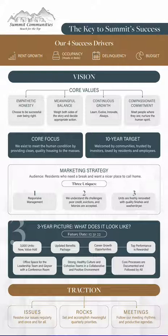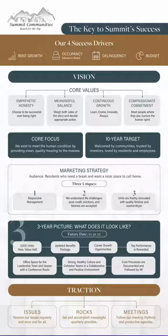The very bottom of this goes into a little more depth into the EOS framework. With EOS, Traction is the name of a book that talks in great depth about EOS. The first element is Issues — how we are very diligent about identifying issues, then discussing them, and then solving them. We resolve our issues regularly and once and for all. Once an issue comes up, whoever's involved is very good about talking it through, identifying it, discussing what's necessary, then making a decision, sticking to it, and moving on to the next challenge.